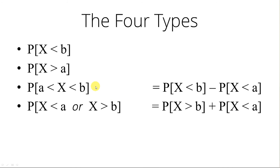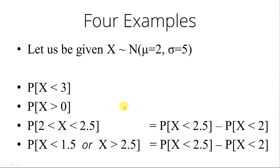Note the difference between the type 3 and type 4 probabilities. Here are some examples — one of each. We are given that X has a normal distribution with mean of 2 and standard deviation of 5. Let's calculate the probability that X is less than 3. To do that, let's get into StatCrunch.